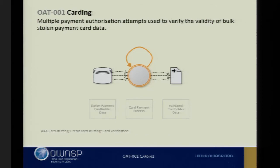A related threat is carding, which is slightly different. Someone might have obtained large numbers of credit and debit card data — stolen from a web application, some other part of a business, or from a criminal marketplace. What the attacker is trying to do is judge the value of the data. They don't know which cards are necessarily valid, so they throw all the cards against the application to try to work out which ones might be worth exploiting further. Also known as card stuffing, credit card stuffing, or card verification.